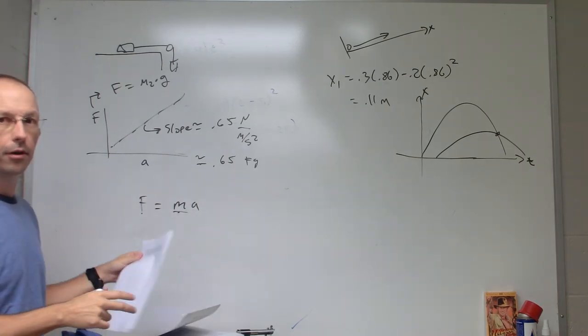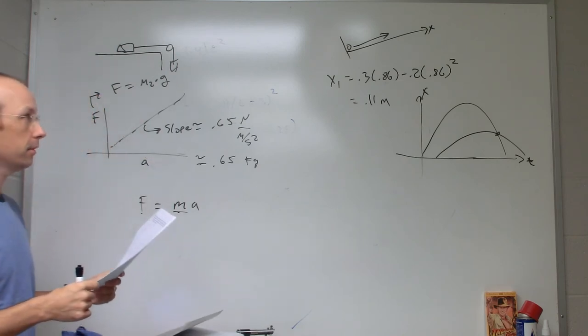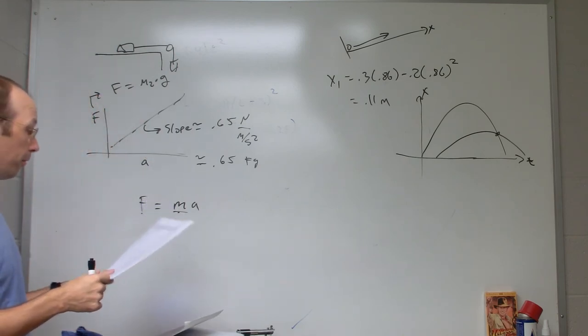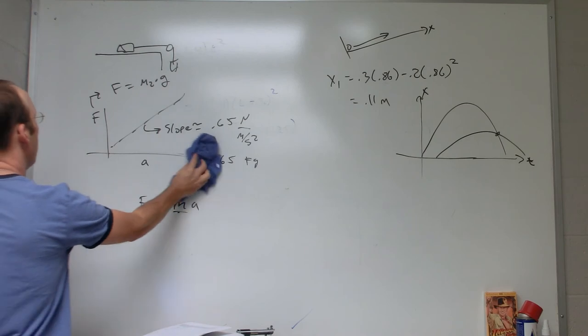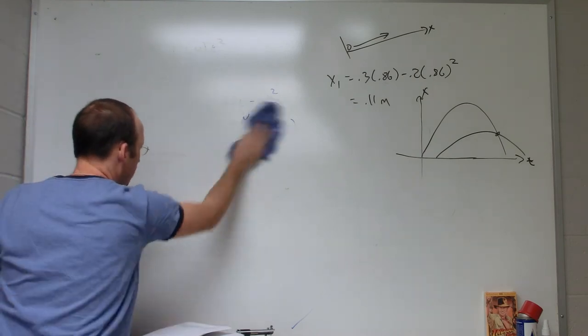Since F equals ma, that's the total mass. If I plot F versus a, the mass would be the slope. So the total mass is 0.65 kilograms. That's all there was to that one. Number three is a ball shot off of a table.